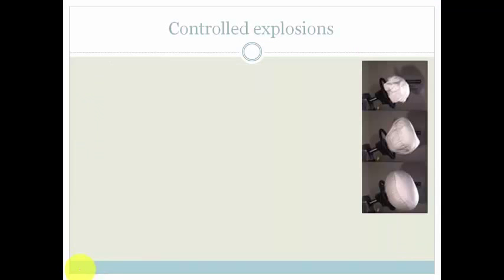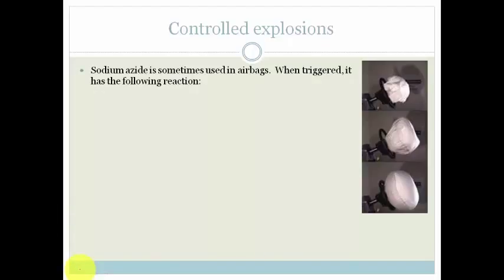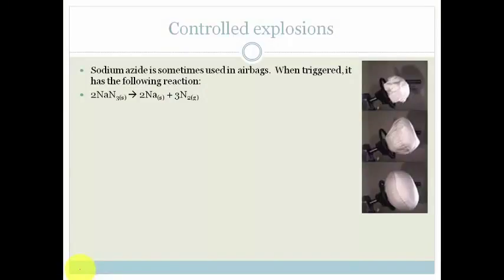Let's look at one more example. In this example, we're talking about controlled explosions. And specifically, we're looking at airbags. So sodium azide is sometimes used in airbags. And when it is triggered, it has the following reaction. Your sodium azide goes to sodium plus nitrogen. And we can watch a little video here quickly. So that's just a little video of this happening in real time. Basically, the sodium azide, when it's triggered, gives off sodium plus nitrogen gas. And this nitrogen gas is what actually powers and inflates the airbag. And the white stuff you sometimes see is the sodium powder.